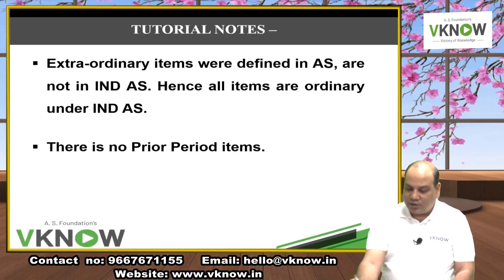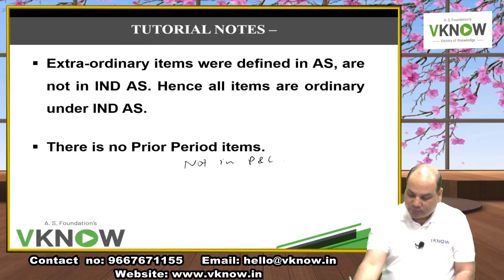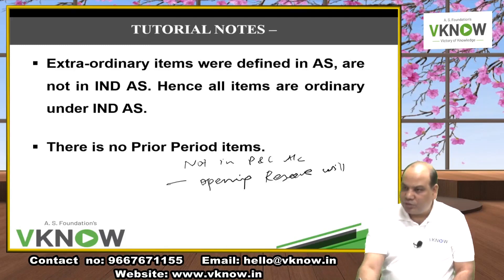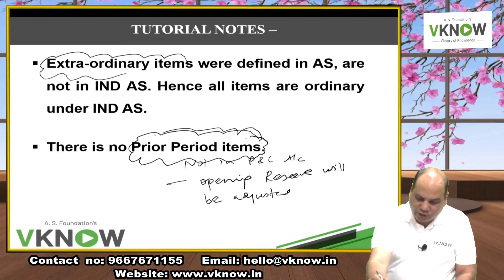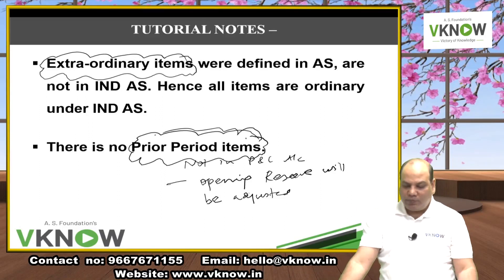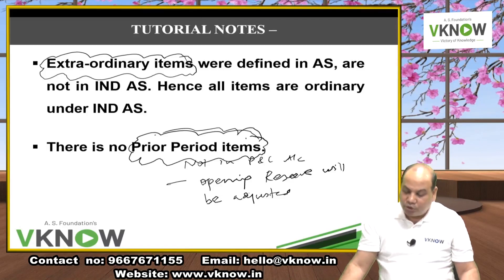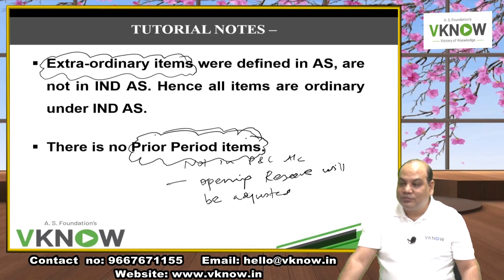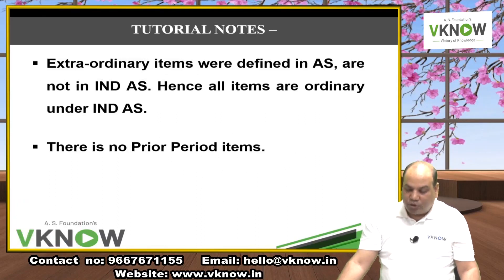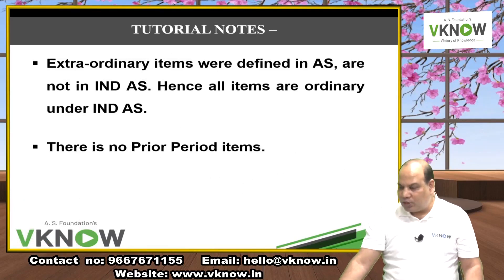This is a revolutionary change in Ind AS. Prior period items go through Statement of Changes in Equity (SOCIE), not P&L. You must also retrospectively adjust — going back to the year the error occurred. Ind AS 8 deals with prior period items. Both extraordinary items and prior period items will no longer appear in P&L in Ind AS.